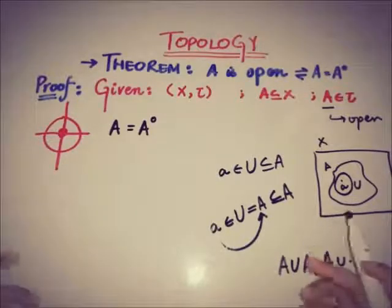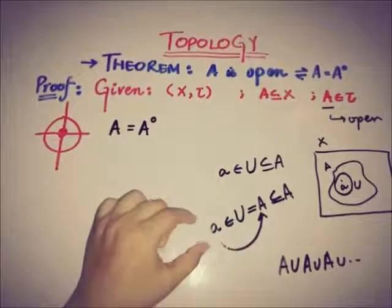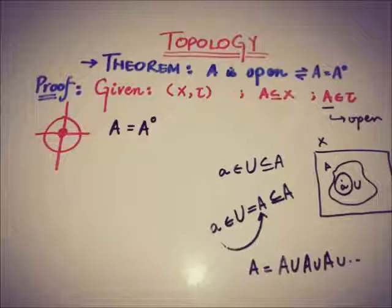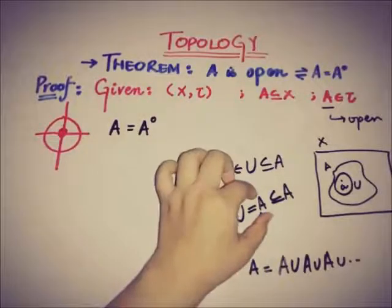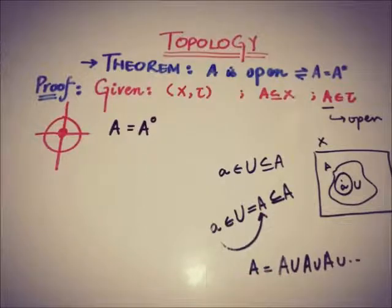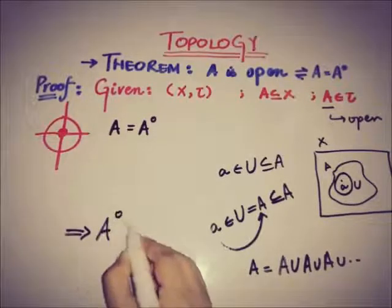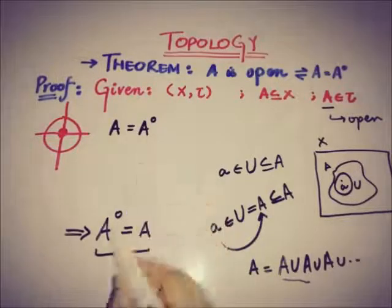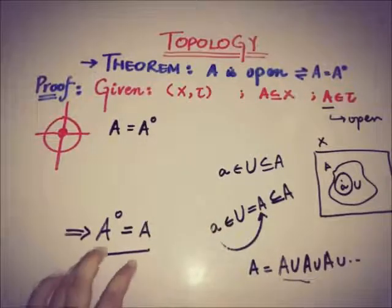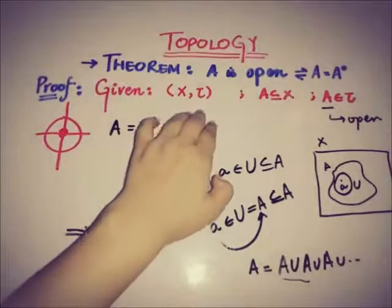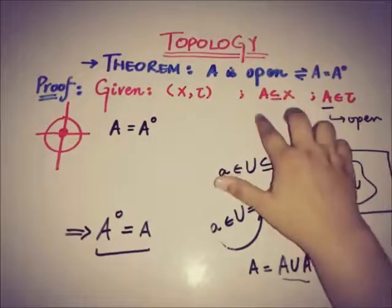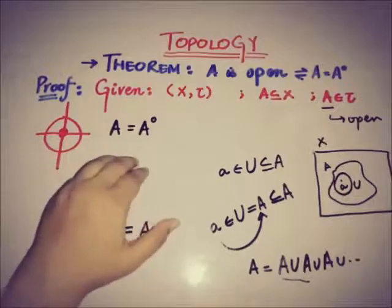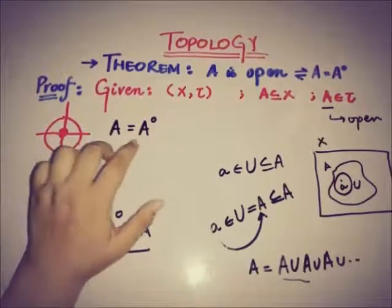The union of all the open neighborhoods of A gives us A. So by the definition of the interior as the union of all open neighborhoods, the interior of A equals A. Thus we have proved: if A is an open set, then the interior of A is A itself.